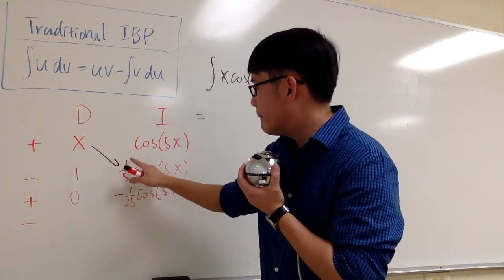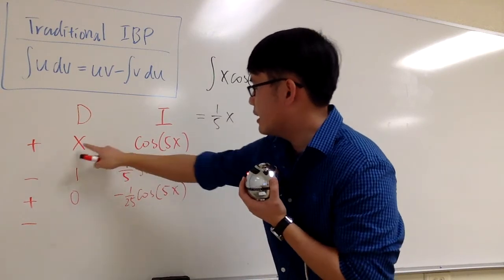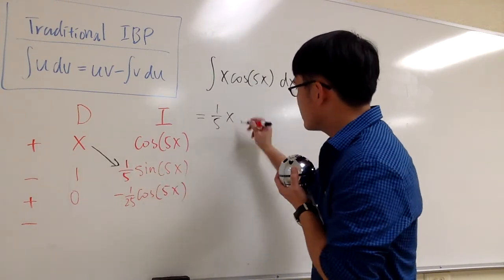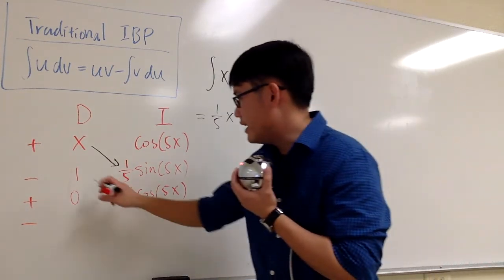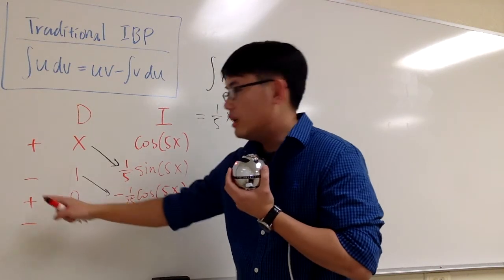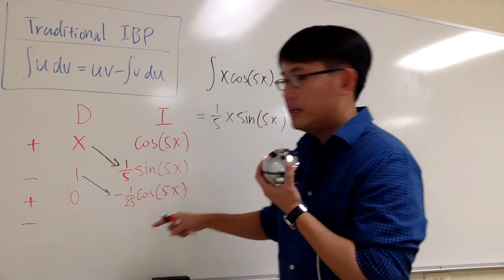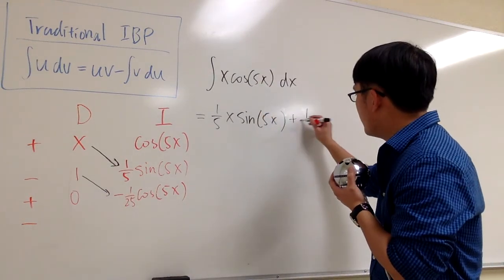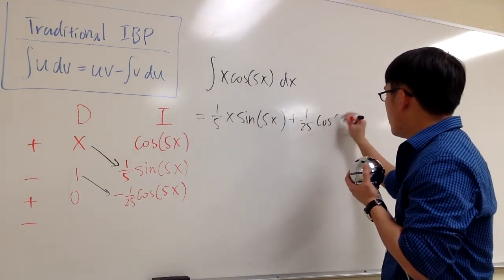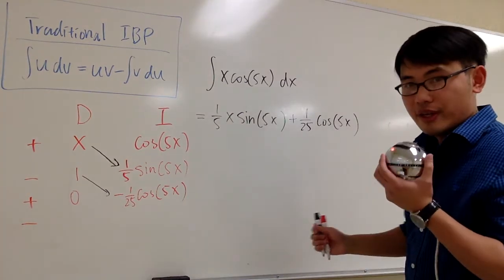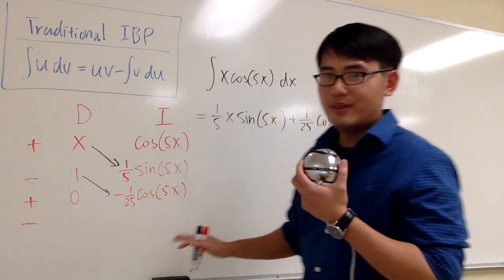So let's do it. x times 1 fifth sine of 5x. It's going to be 1 fifth x sine of 5x. And then the next part of the answer is going to be a product of this diagonal. Account for the sign though. Negative 1 times negative 1 over 25 is going to be positive 1 over 25 cosine of 5x. And we are done.